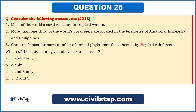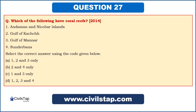The next question asked in prelims 2014: which locations in India have coral reefs? Options are: 1) Andaman and Nicobar Islands, 2) Gulf of Kutch, 3) Gulf of Mannar, and 4) Sundarbans. Coral reefs are very important from UPSC's point of view. We need to know where they are in India, where they are in the world, how they form, what conditions they require, and what problems they face. So let us first understand what corals are and how coral reefs form.